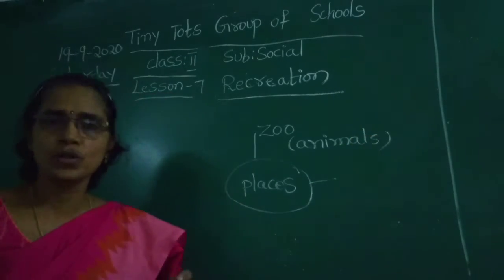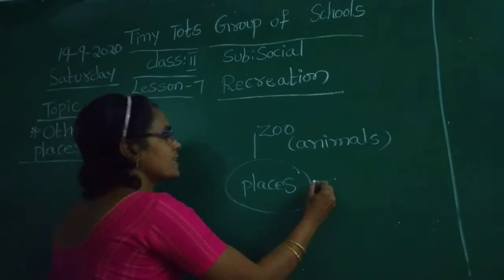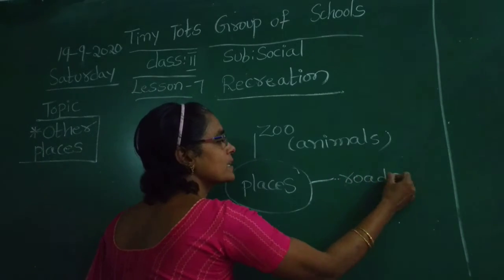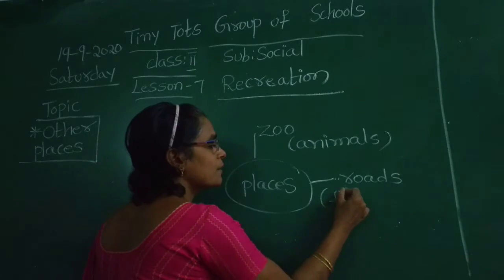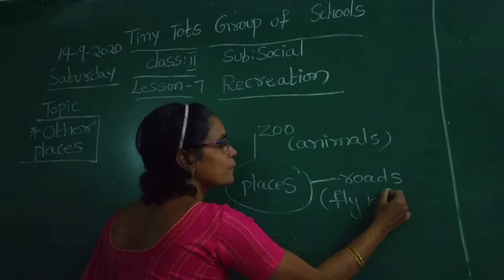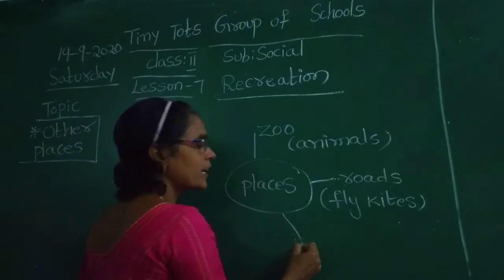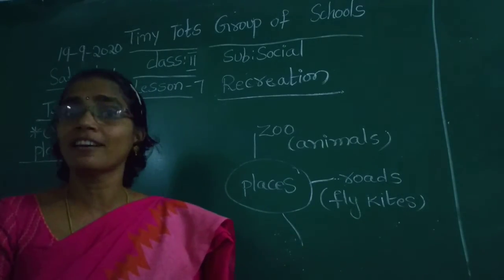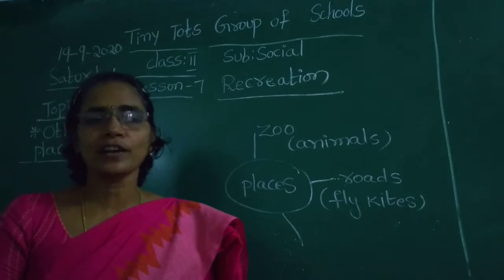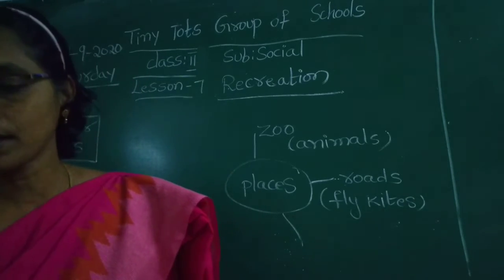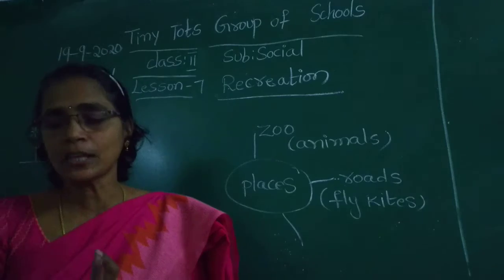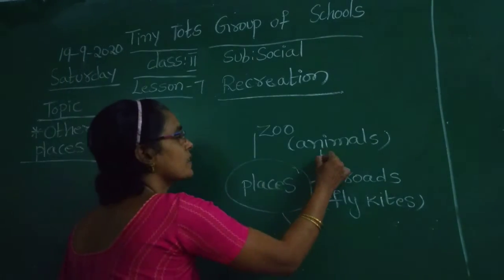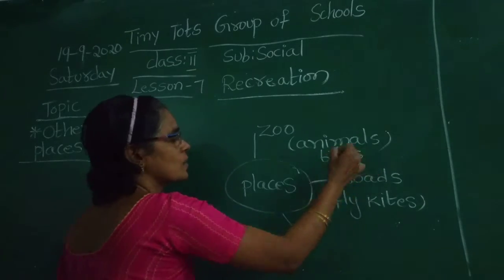Some children go outside and they fly kites on roads. These are places to enjoy. On Sankranti day, we fly kites. The zoo is also an interesting place where we can see different types of birds and animals.